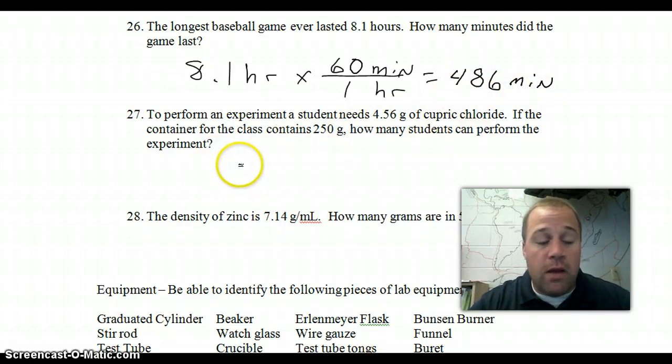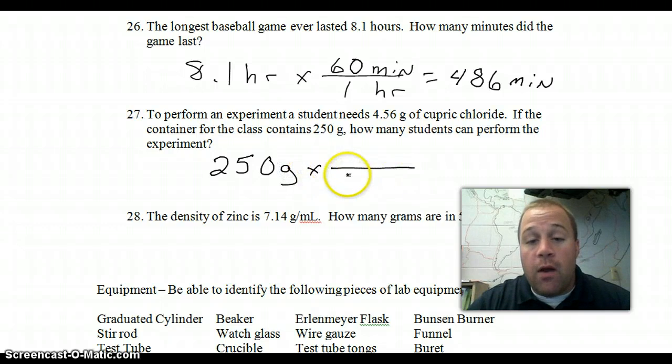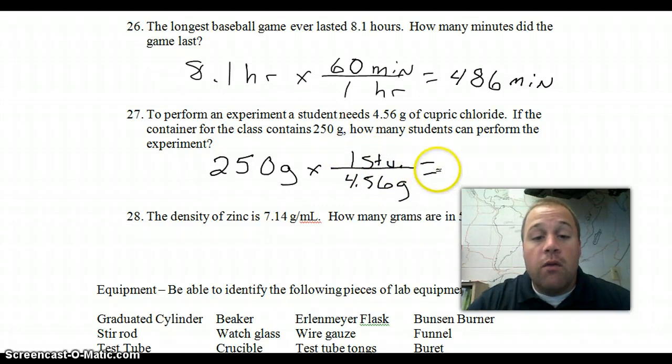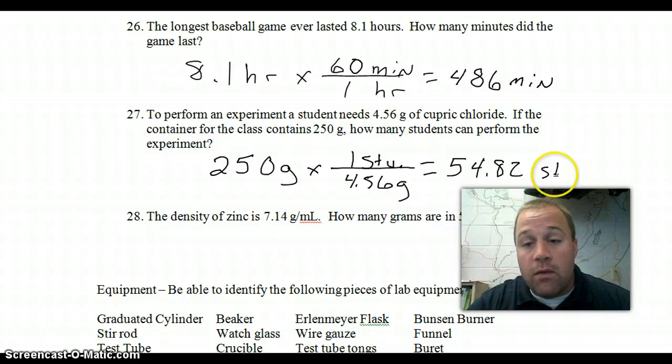For number 27, it is also a conversion problem. It says that each student needs 4.56 grams in order to be able to do an experiment. And, we have 250 grams. How many students can perform it? So, we have 250 grams. And, we know that there are 4.56 grams for every one student. Let's abbreviate it Stu. So, we are going to do 250 divided by 4.56. You get 54.82 students. Now, you can't have 0.82 of a student. So, the answer here for how many students could actually get it done is 54.